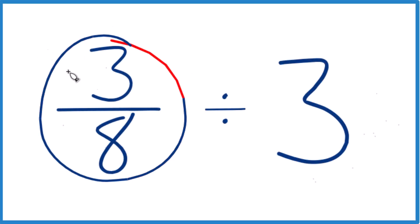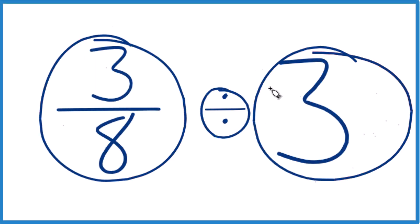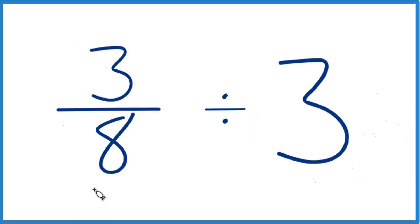Okay. Three eighths divided by three. Here's how you do it. First off, three eighths, that's less than one. So we're trying to see how many times three fits into a number less than one. So we should end up with a pretty small number. Keep that in mind.